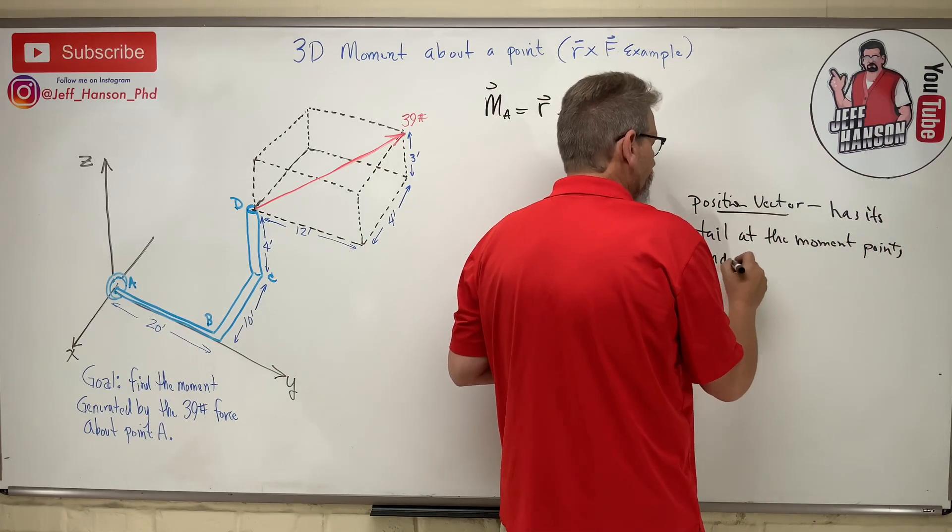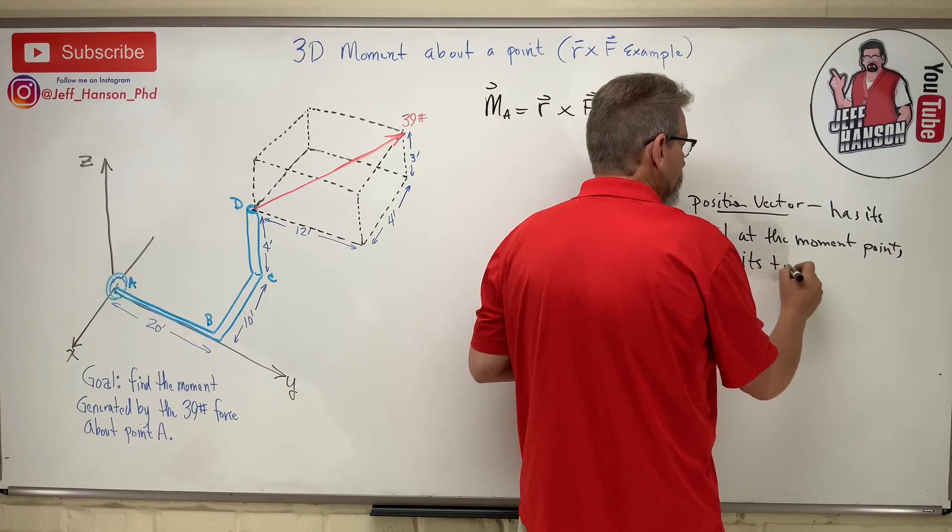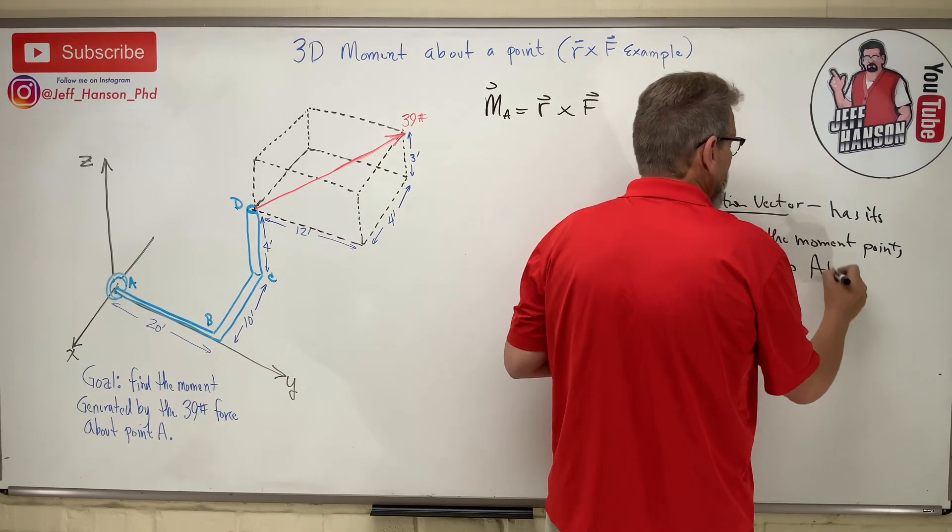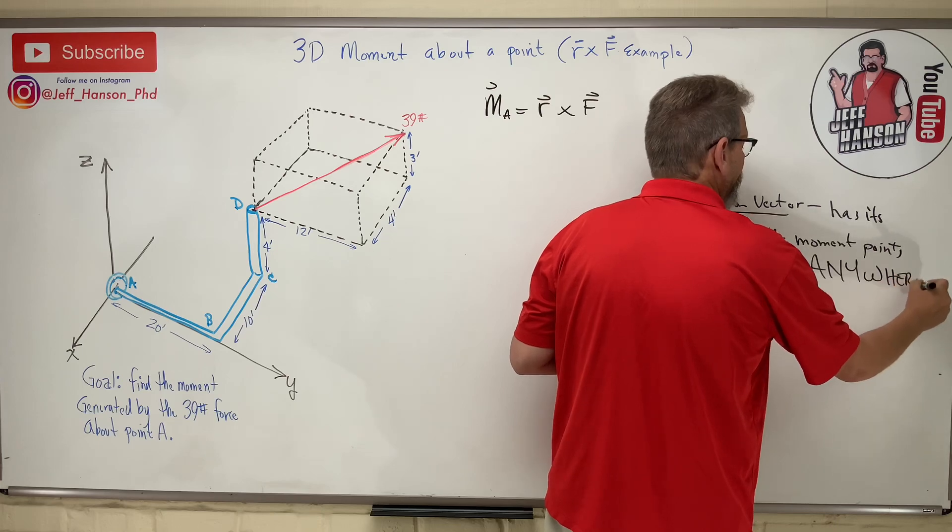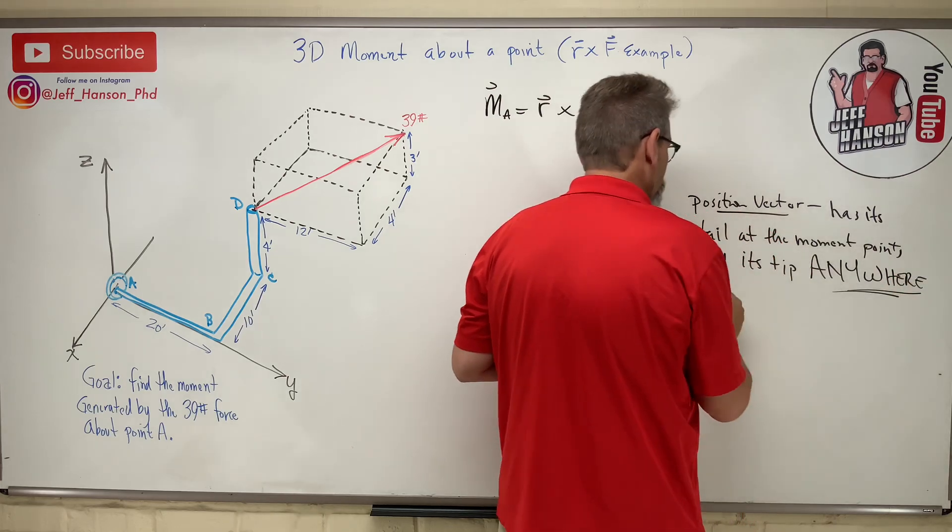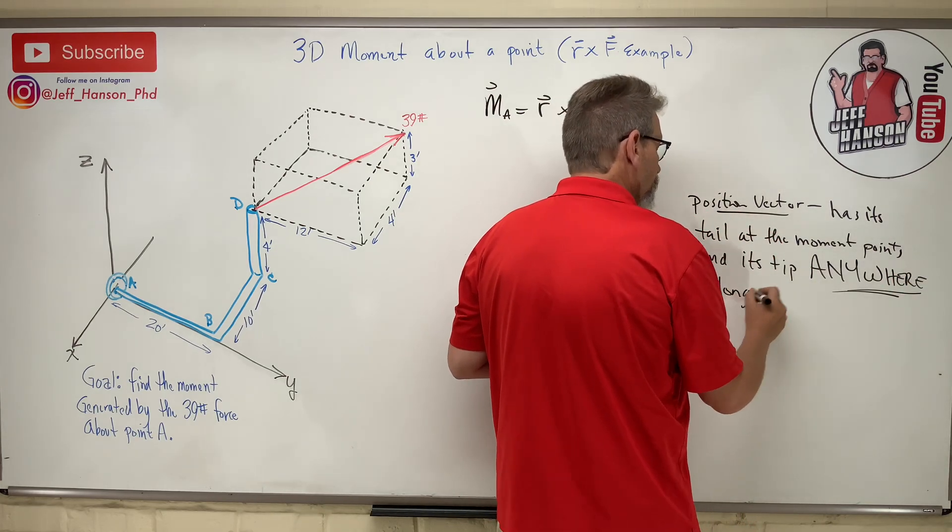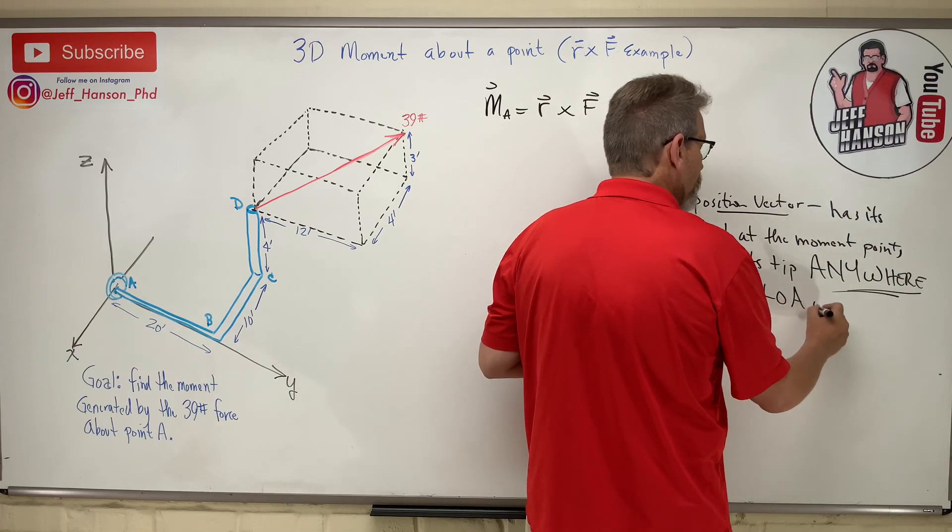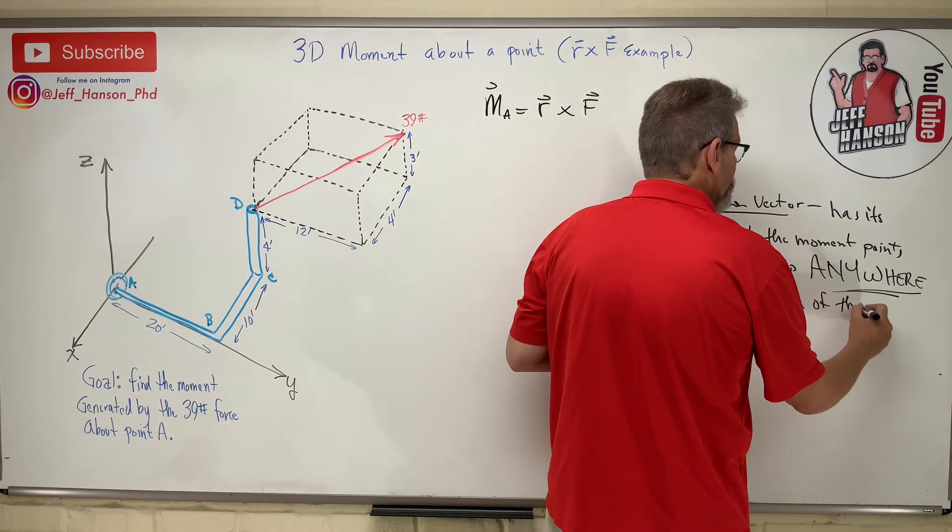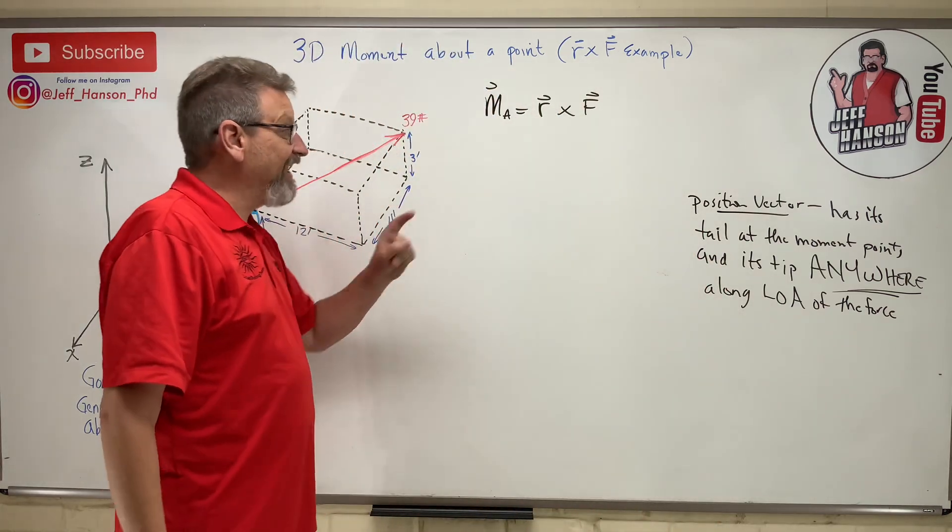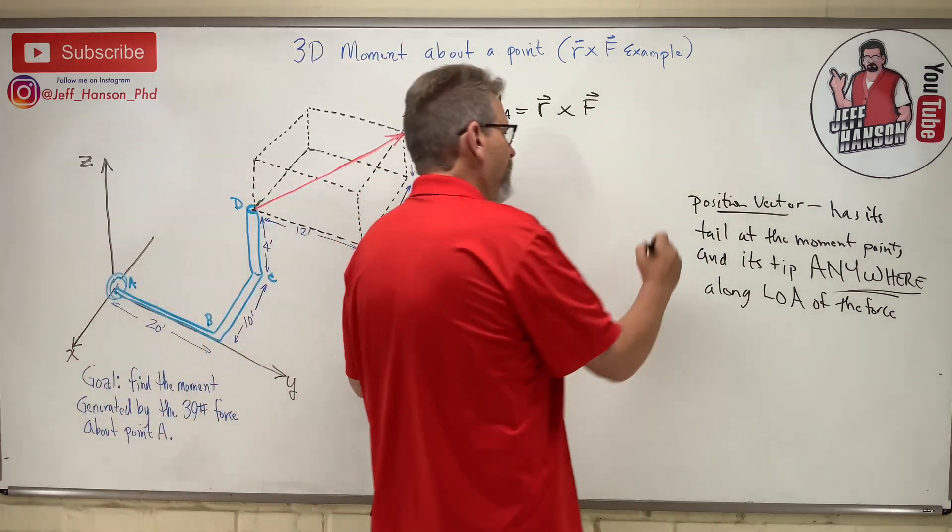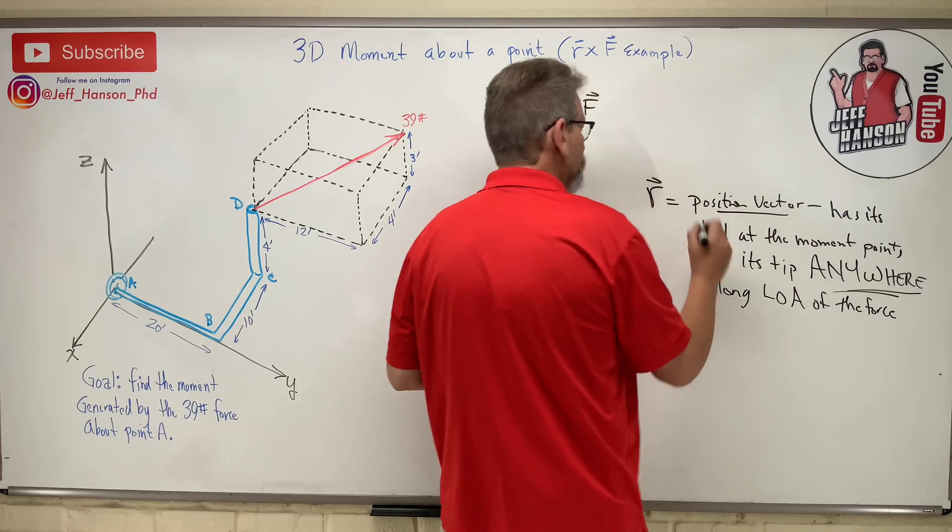And its tip anywhere along the line of action of the force. Okay, that's what a position vector is. That is vector r.